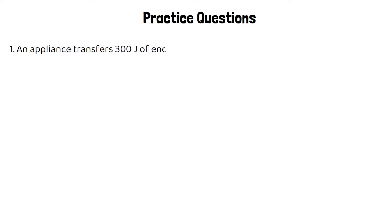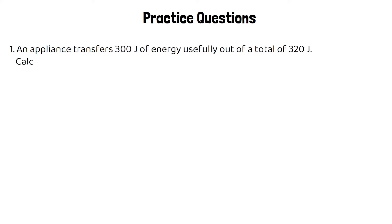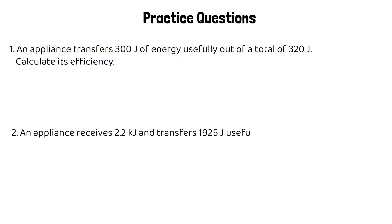Here are a couple of practice questions for you using this equation. An appliance transfers 300 joules of energy usefully out of a total of 320 joules — calculate its efficiency. An appliance receives 2.2 kilojoules and transfers 1,925 joules usefully — calculate its efficiency. Pause the video and have a go.